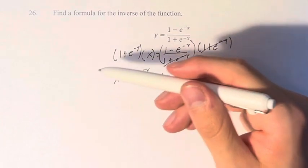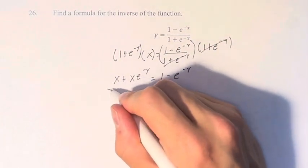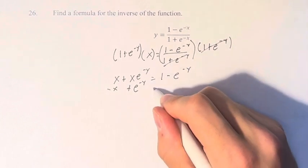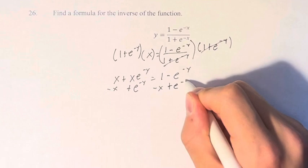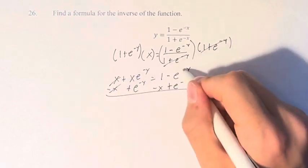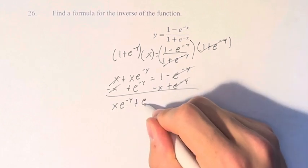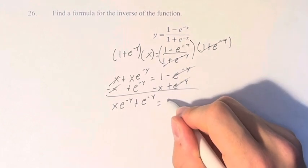So now we want to get all the y terms on one side and all the others on the other. So we're going to subtract x and we're going to add e to the negative y to both sides. These cancel, these cancel. And we're left with x times e to the negative y plus e to the negative y is equal to 1 minus x.